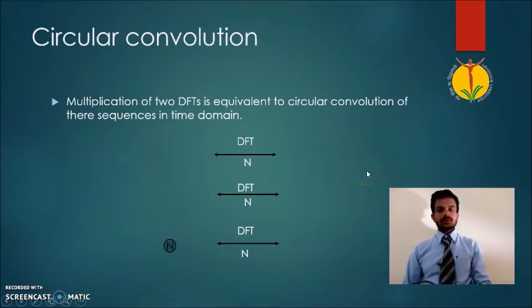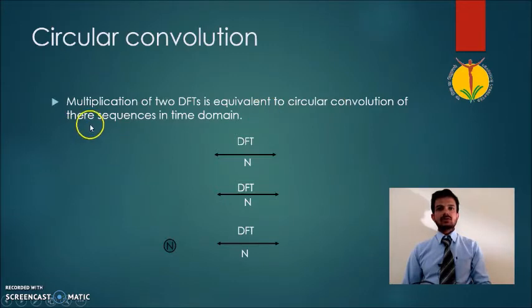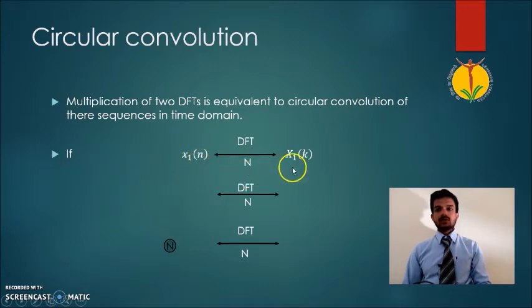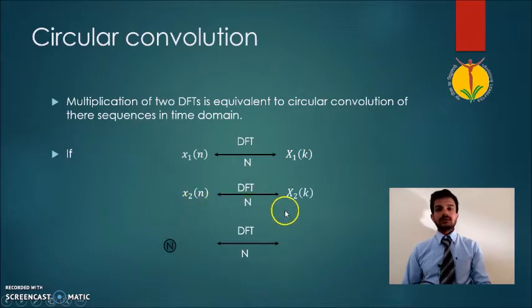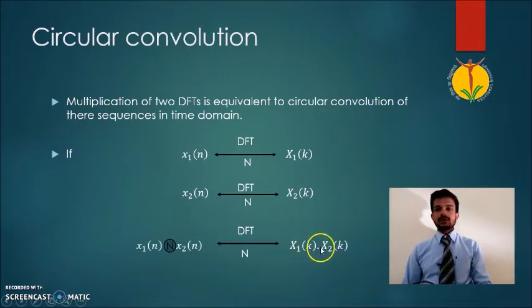Let us see the property of circular convolution. We know that for given sequences, the multiplication of two DFTs is equivalent to the circular convolution of their sequences in the time domain. That is, if one sequence is x1 of n with DFT x1 of k, and another sequence x2 of n with DFT x2 of k, then the multiplication of these two DFTs is equivalent to the circular convolution of x1 of n and x2 of n.